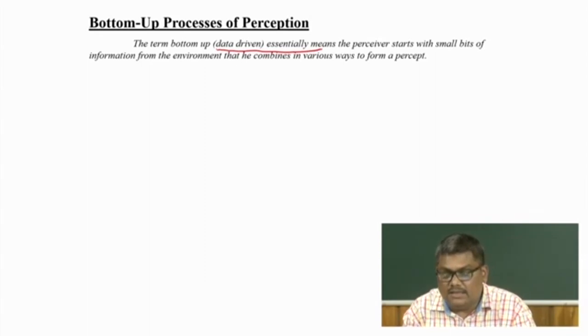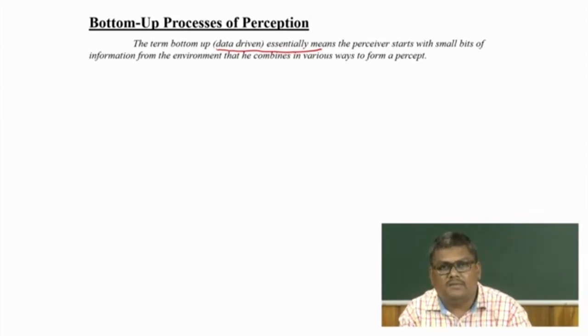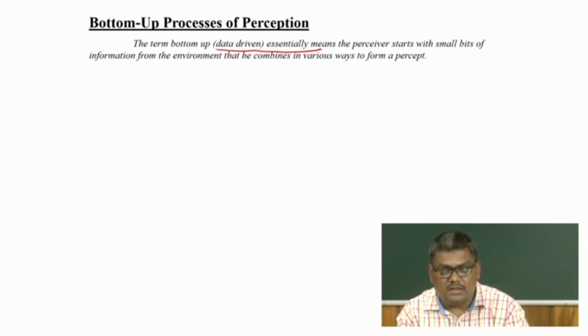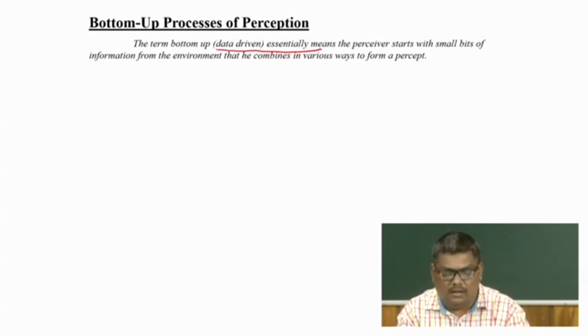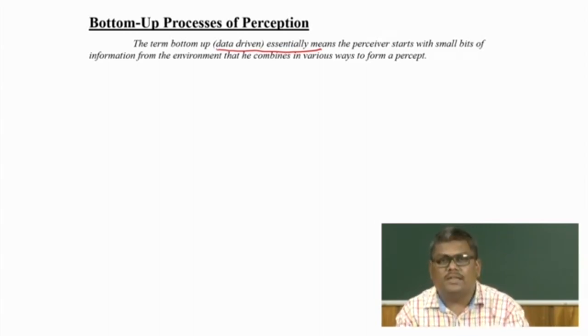The bottom-up process, or data-driven process, essentially means the perceiver starts with bits and pieces of information about the object in the environment and integrates them together to form a percept. If you are looking at a tree, the idea that green leaves are there, a brown trunk is there, fruits are there, flowers are there, it is of a certain height and texture — all this information passed from the retina to the occipital visual processing area is what constitutes the bottom-up process.